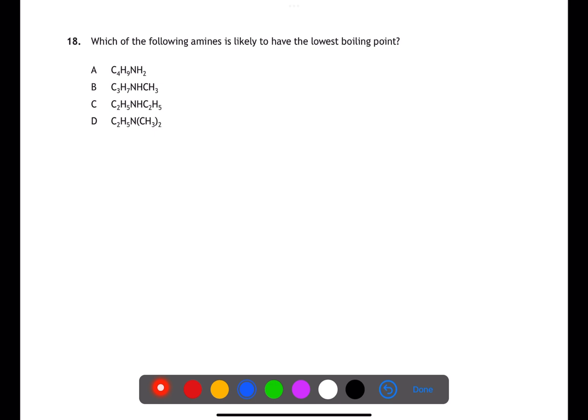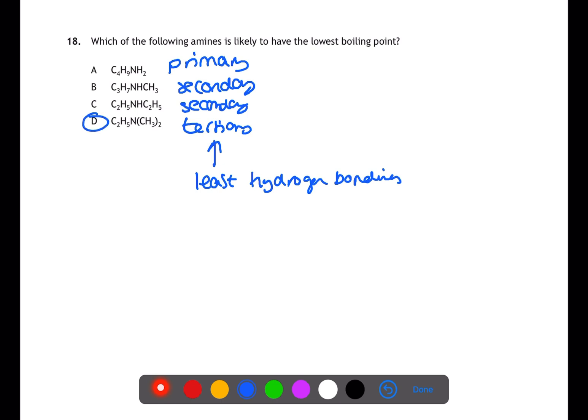Question 18 is looking at the boiling points of amines. The lowest boiling point will be for an amine which is tertiary as it will have the least amount of hydrogen bonding. A is primary, B and C are secondary, and D is tertiary with three carbon chains attached to the nitrogen. This will therefore have the least hydrogen bonding between molecules and the lowest boiling point.